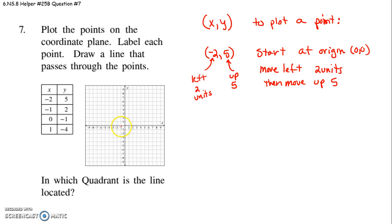Negative 2 says move left 2. Positive 5 says move up 1, 2, 3, 4, 5. This right here is the point negative 2, 5. And if they ask you to label the points, they actually want you to put in this negative 2, 5 next to that.